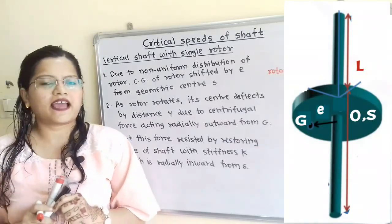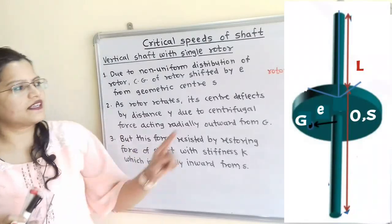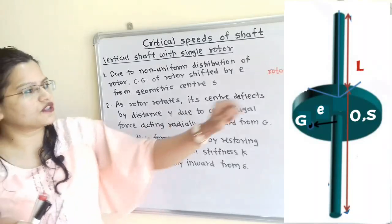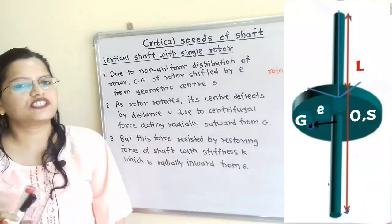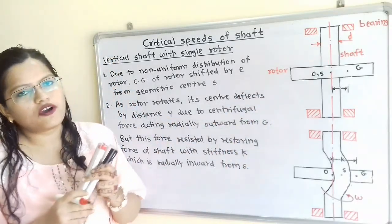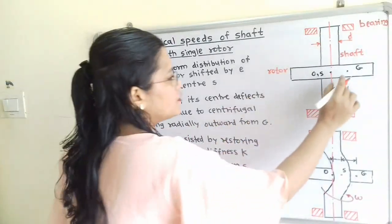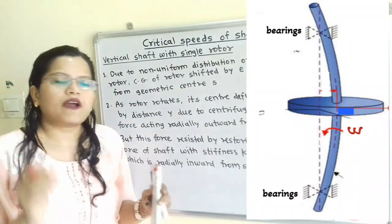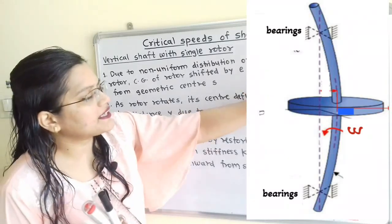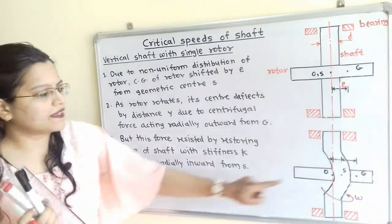Let us understand some important formulas related to critical speeds of the shaft. Consider a vertical shaft with a single rotor supported in bearings. Due to non-uniform distribution of the rotor, the center of gravity point G is shifted by a distance E from the geometric center S. The vertical dash-dot line passing through S is the center line. As the rotor rotates with angular velocity omega, the geometric center S is deflected by a distance Y from the center line passing through O.